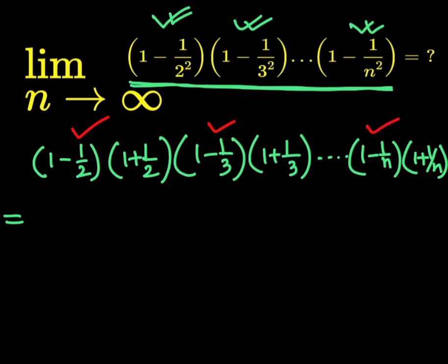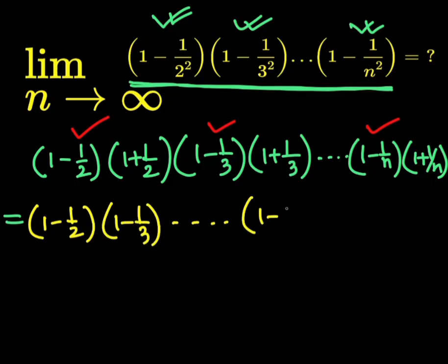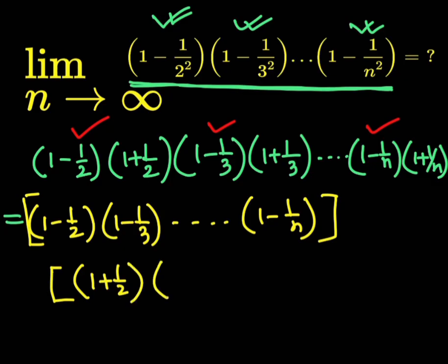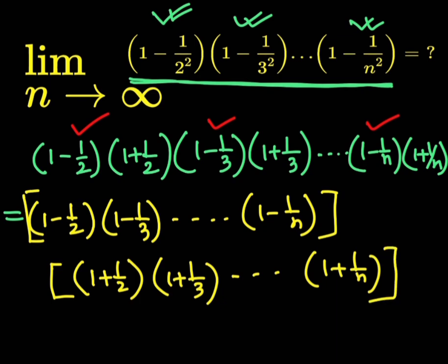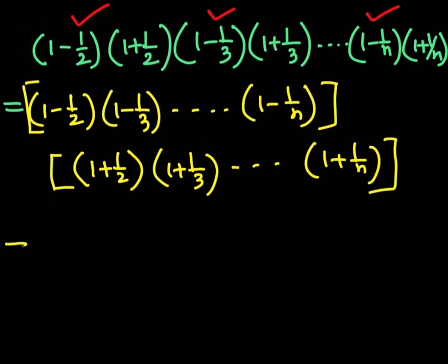We take the first terms of the product and group them: one minus half, one minus one third, dot dot dot, one minus one by n. The second group is: one plus half, one plus one third, dot dot dot, one plus one by n. So we have two groups.